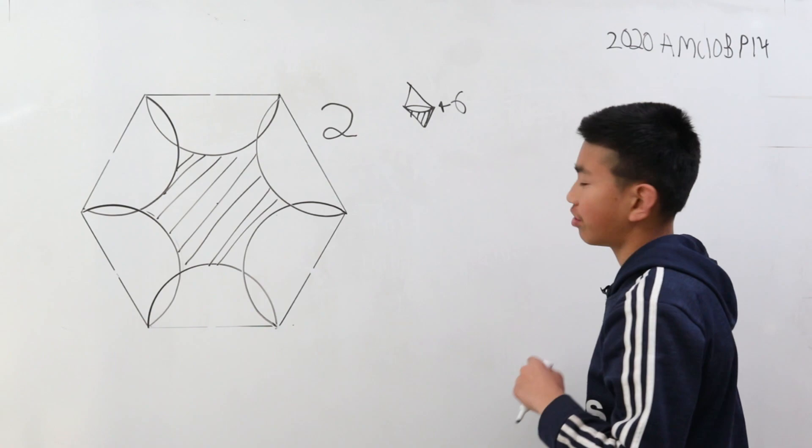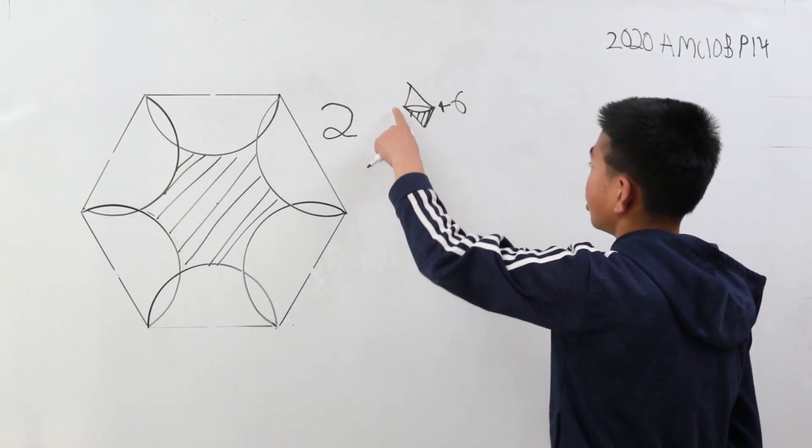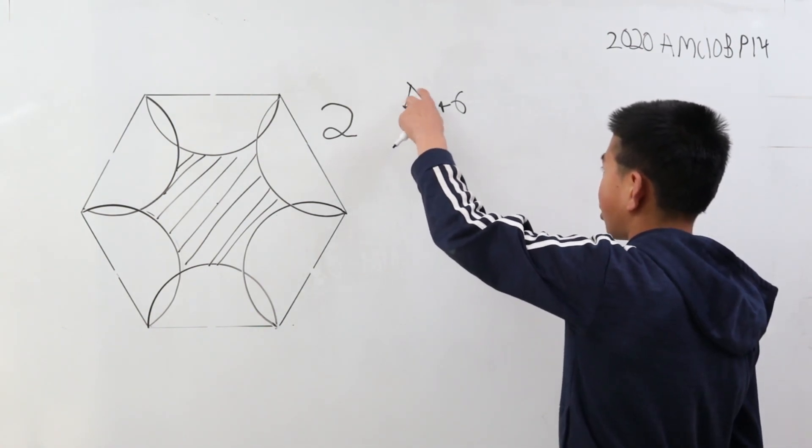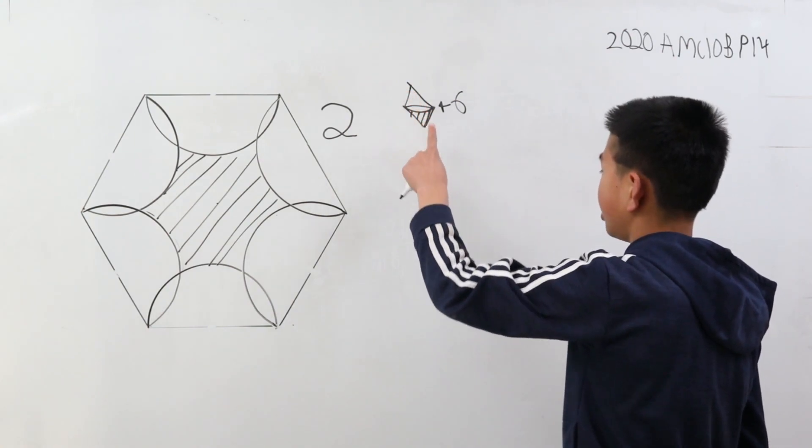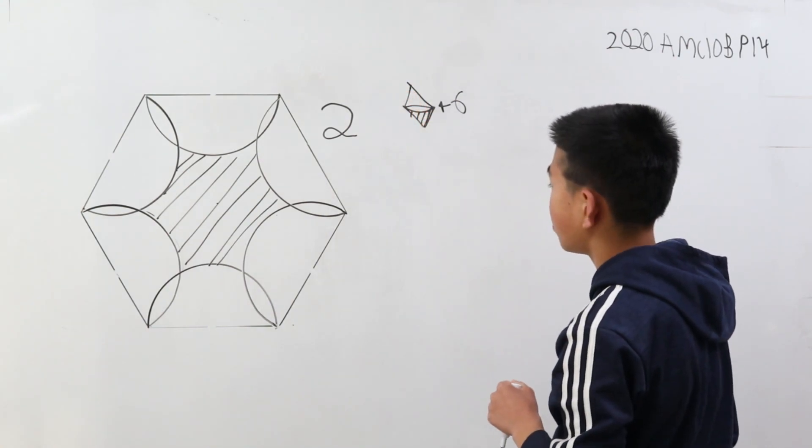To find the area of the shaded region, we can just find these two regions, subtract this unshaded region, and then multiply that by six.